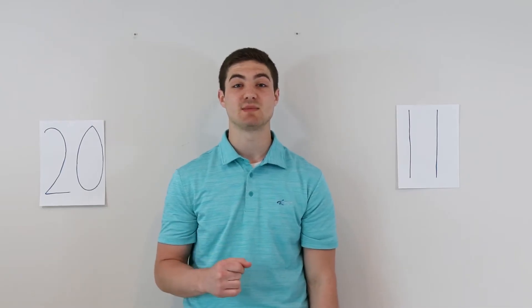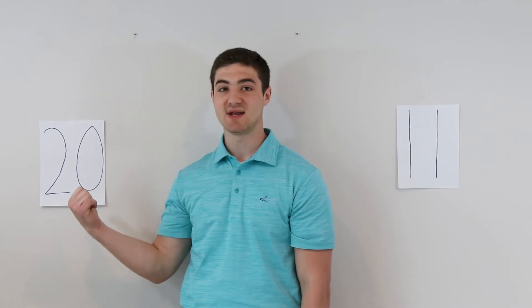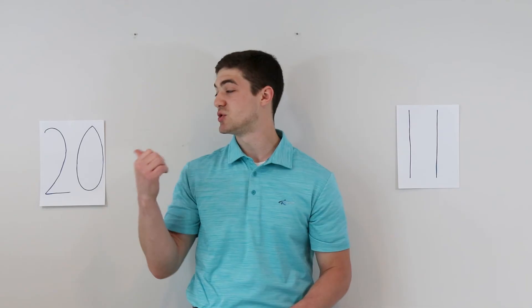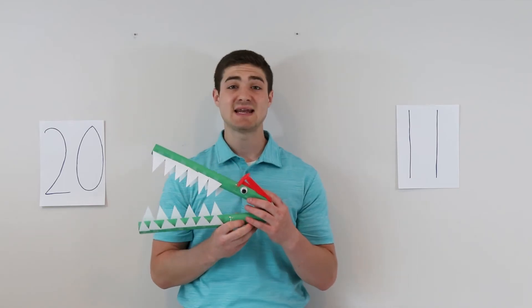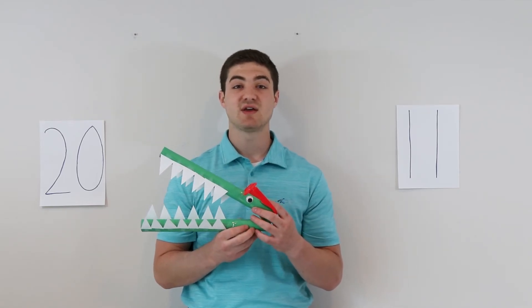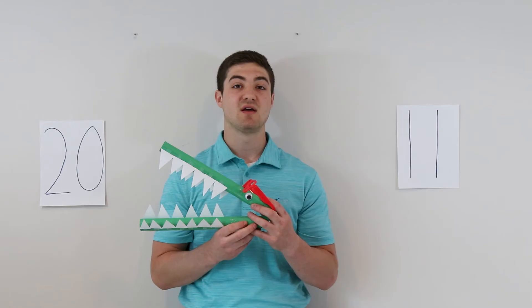So now that we have our two numbers up, we're going to have to see which number Danny is going to want to eat for breakfast. We have 20 and we have 11. So now we have to figure out: is Danny going to want to eat 20 goldfish or is Danny going to want to eat 11 goldfish? Danny always loves to eat the bigger number. So we know 20 is much bigger than 11. So we would say Danny wants to eat the 20. Since 20 is bigger, we would say 20 is greater than 11.